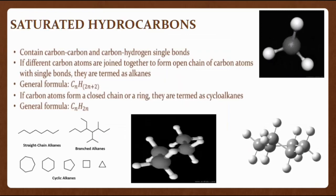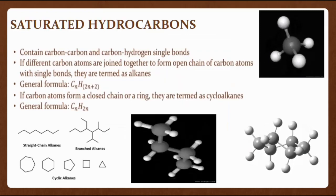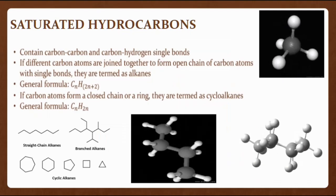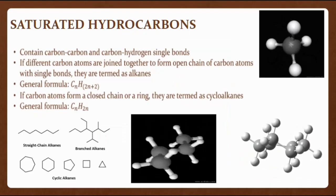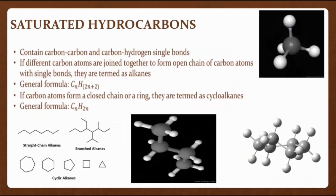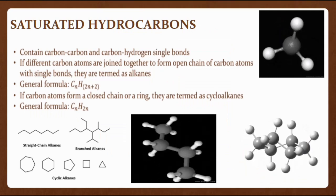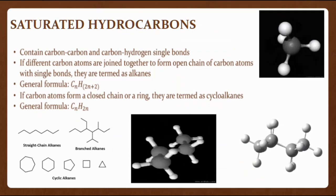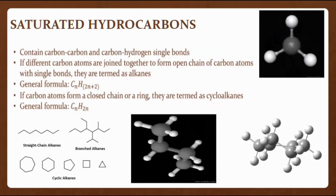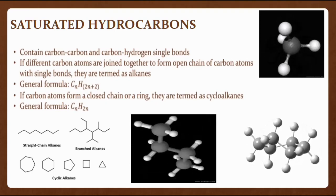Saturated compounds contain carbon-carbon and carbon-hydrogen single bonds. If different carbon atoms are joined together to form an open chain of carbon atoms with single bonds, they are termed as alkanes with the general formula CₙH₂ₙ₊₂. If carbon atoms form a closed chain or a ring, they are termed as cycloalkanes with the general formula CₙH₂ₙ. Here are some examples of open chain and closed chain saturated hydrocarbons.